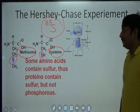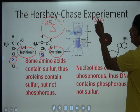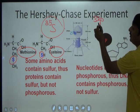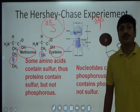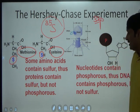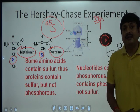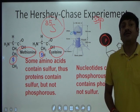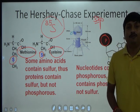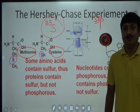In order to radiolabel DNA, they used the phosphorus-32 isotope — a radioisotope of phosphorus. They used phosphorus-32 to radiolabel DNA because in the structure of DNA there is presence of phosphorus, and proteins generally do not have phosphorus in their structure. So when phosphorus-32 was used, only the DNA of bacteriophage got radiolabeled.